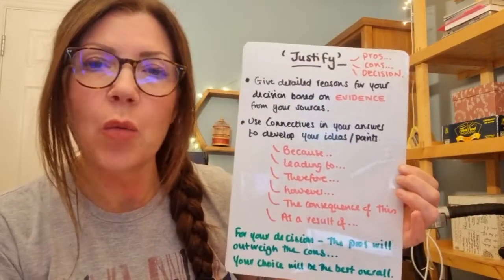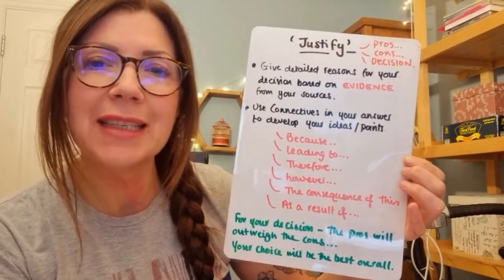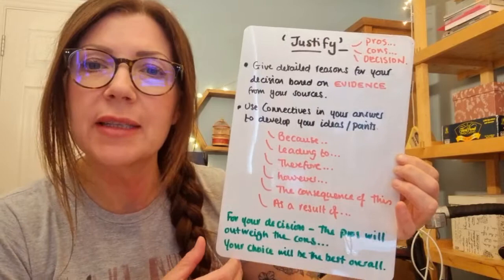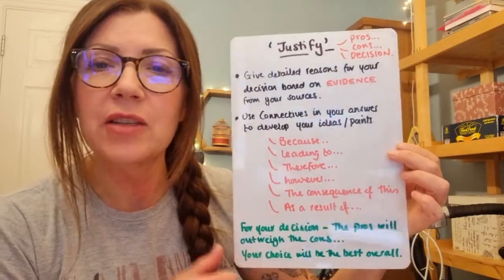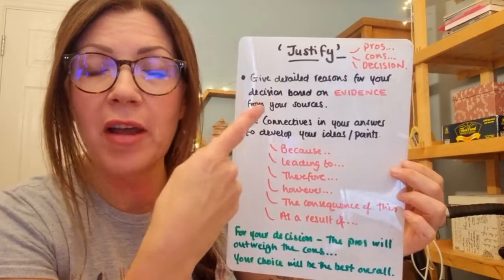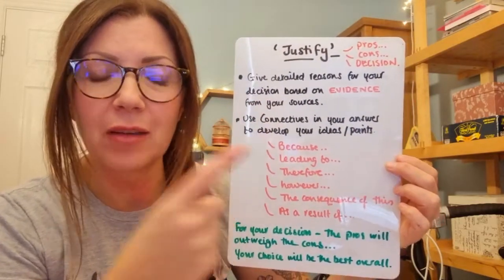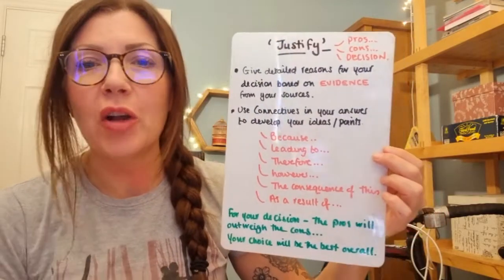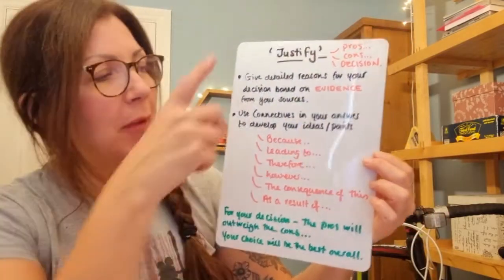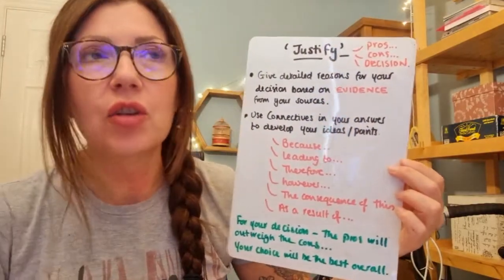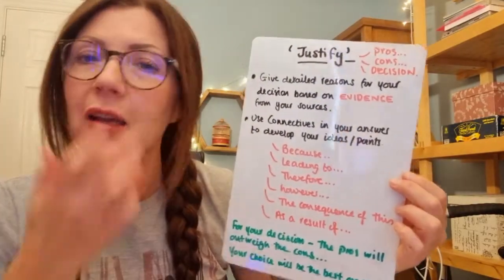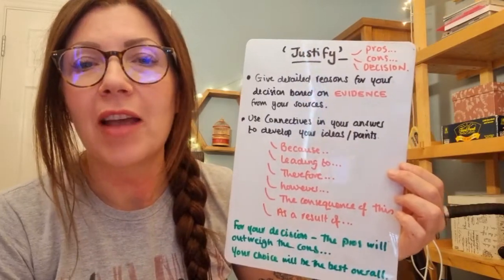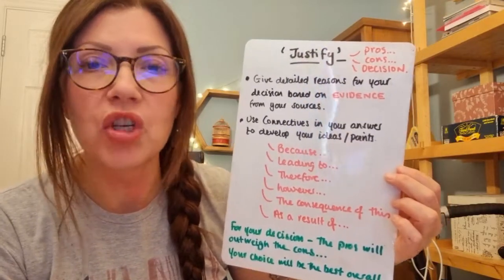Hi guys, in this video we're going to consider how we might write a response that leads us to have to justify an answer. The question we're going to look at is: should the government of China have introduced the one child policy?